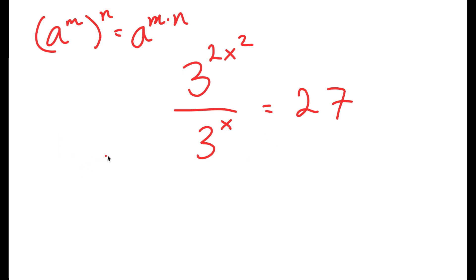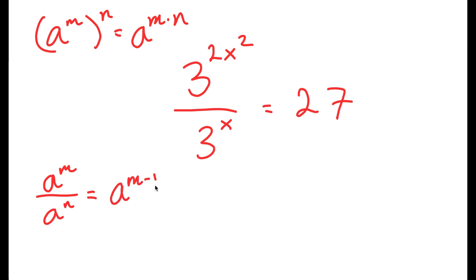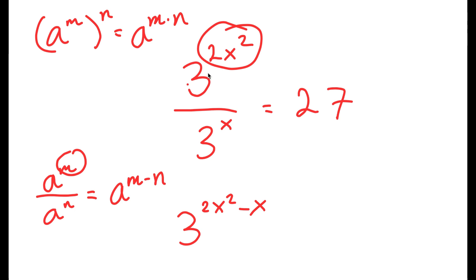Another property of exponents I can use here is that a to the power of m over a to the power of n equals a to the power of m minus n. So 3 to the power of 2x squared over 3 to the power of x equals 3 to the power of 2x squared minus x, because 2x squared is m and x is n. So this gives us 3 to the power of 2x squared minus x, equal to 27.